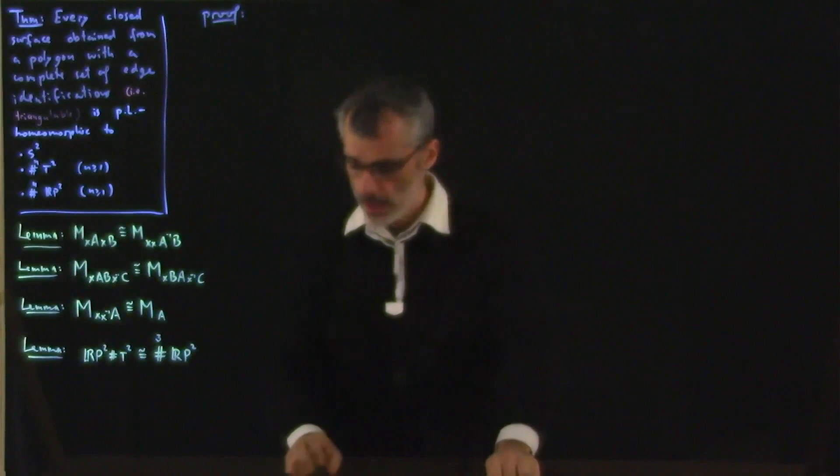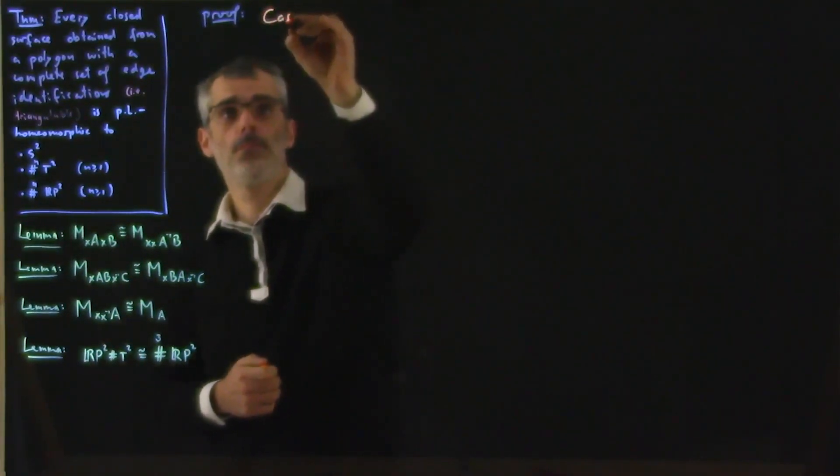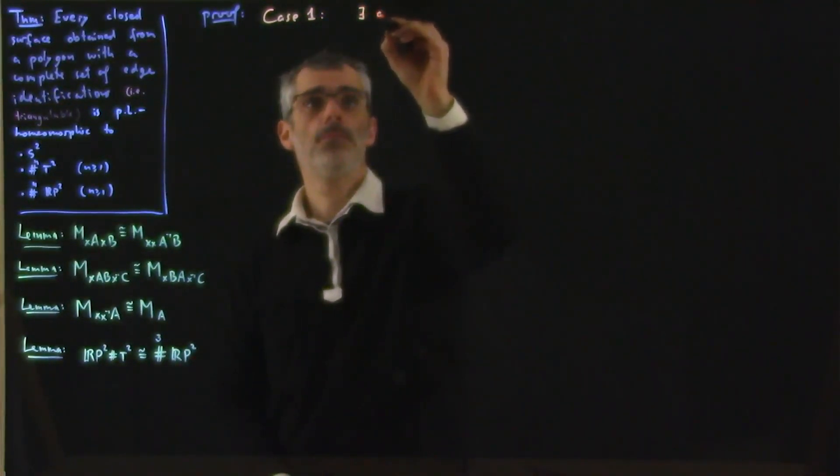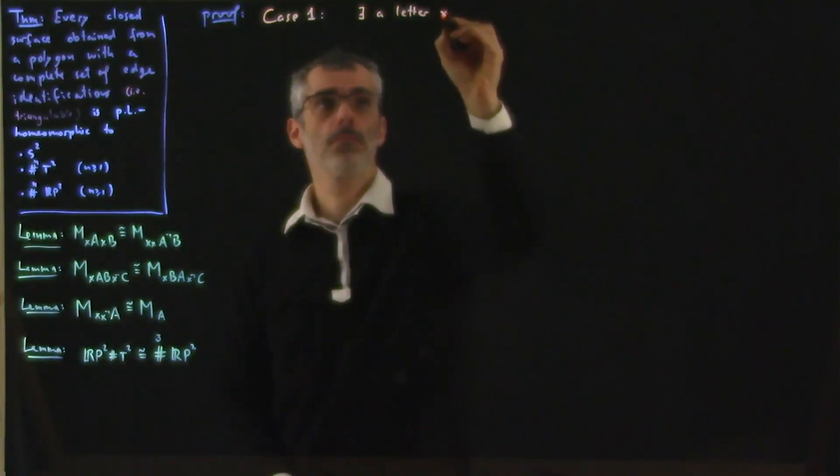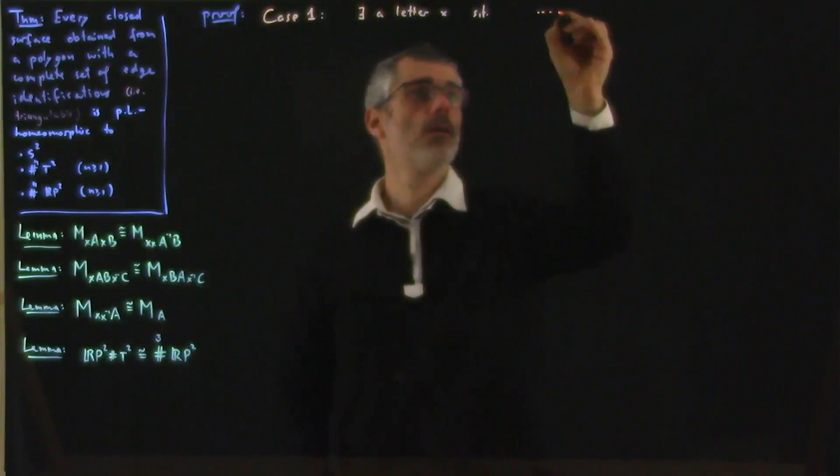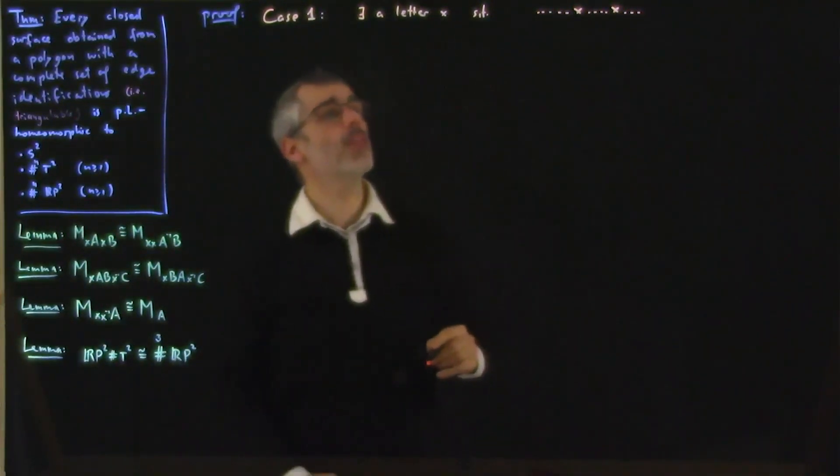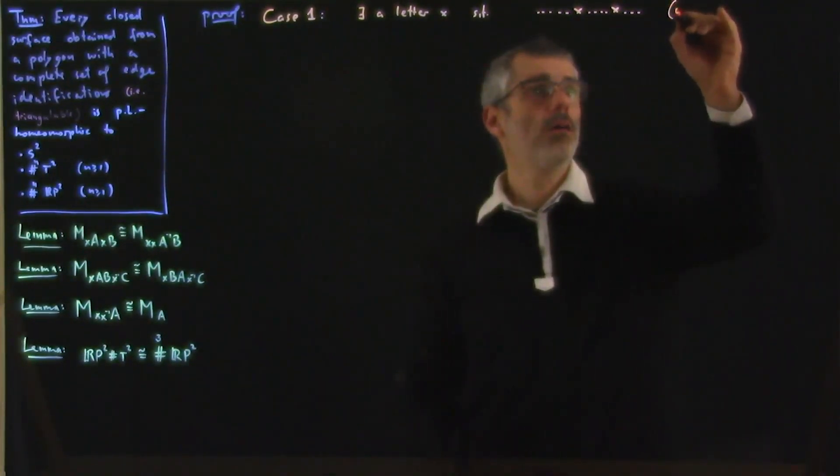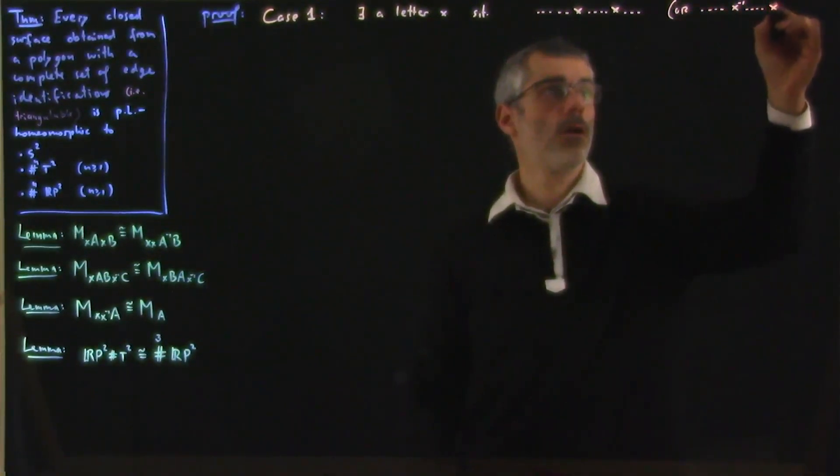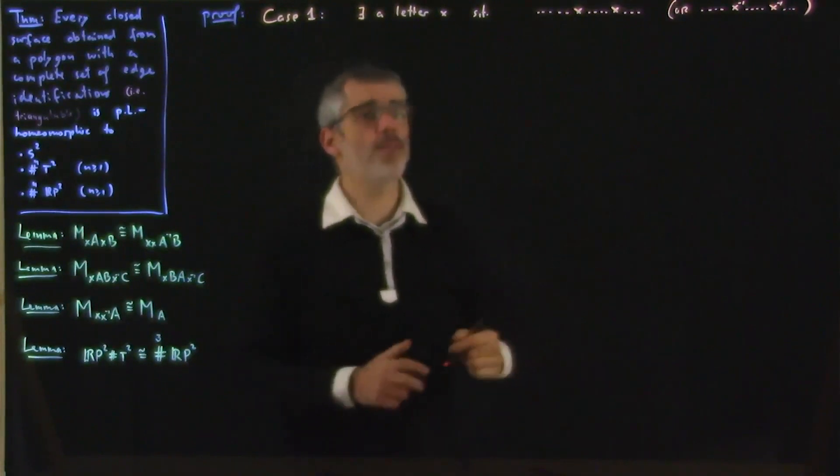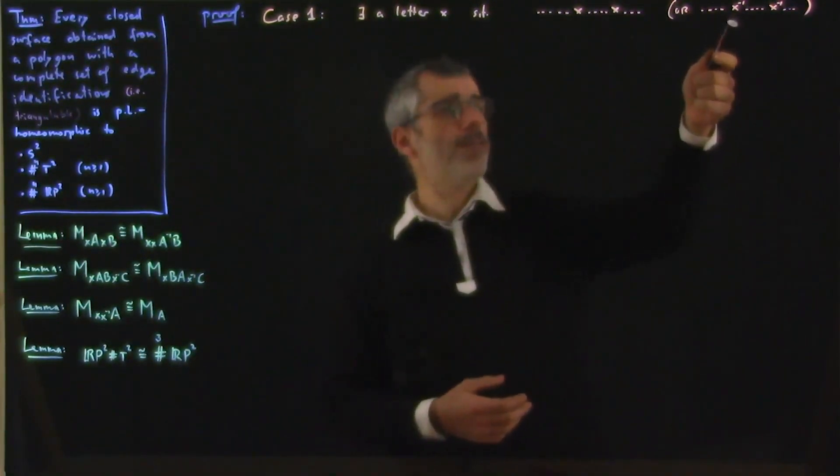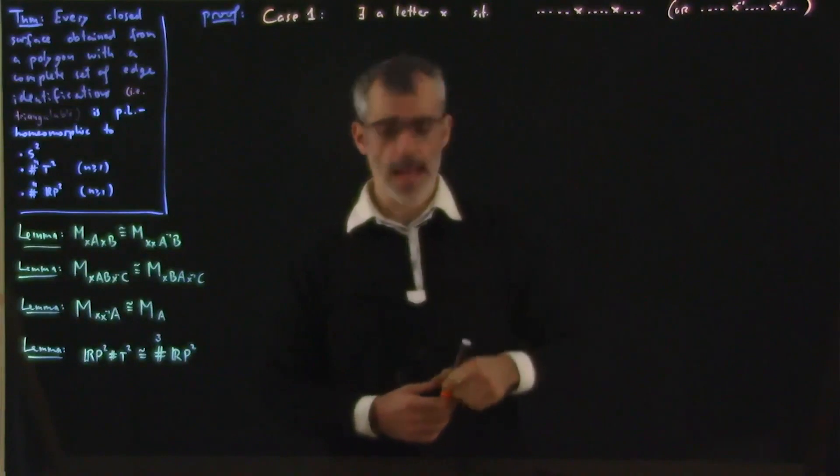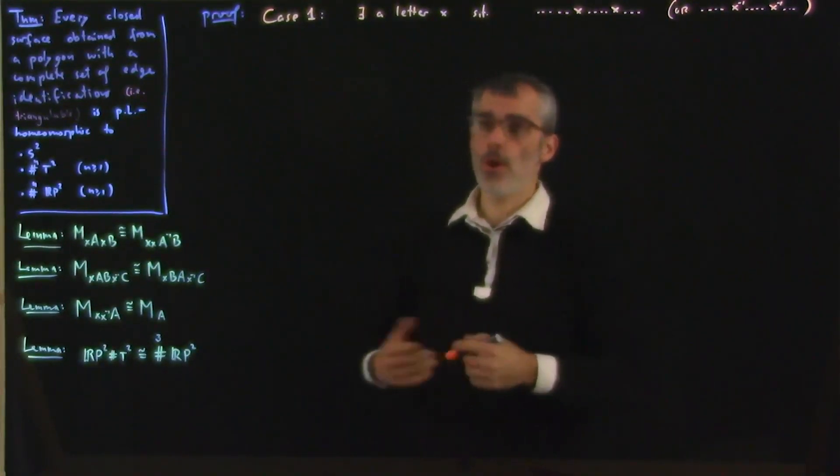So we start with a word, and case one is that there exists a letter which appears twice in the word, both as x, not as x and x inverse. Or once as x inverse, which of course would be a bit stupid because we can redefine it to be x and then this case visibly reduces to that case. So this case is the case of non-orientable surfaces.